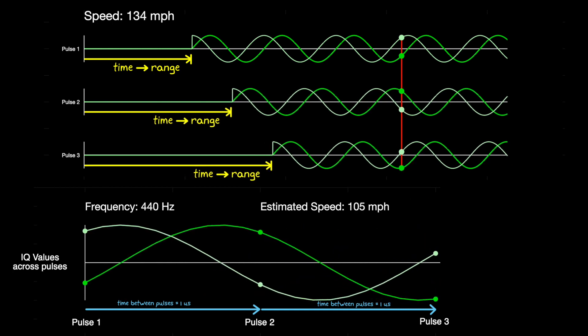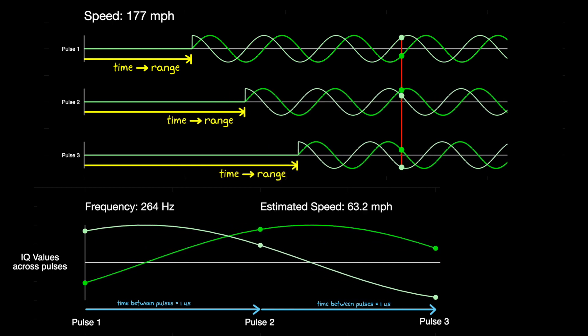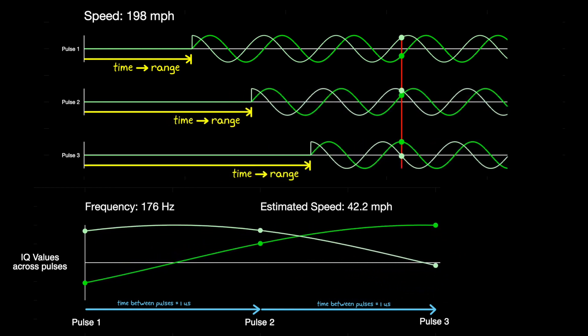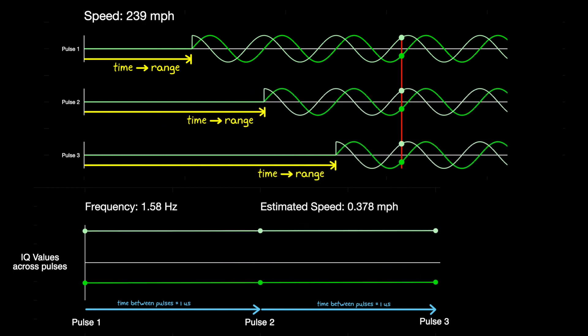Now, eventually, if the object's speed keeps increasing, the delay between pulses is such that we sample at exactly one wavelength. And at that point, the frequency of the sampled signal is zero hertz again, and the object looks like it isn't moving.